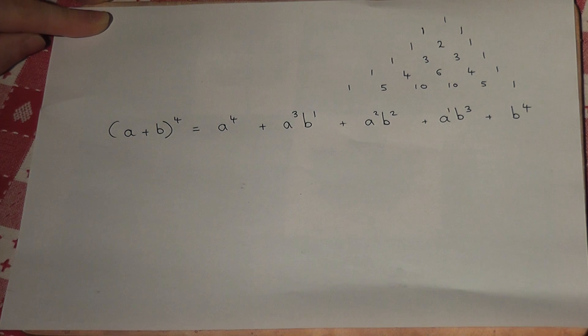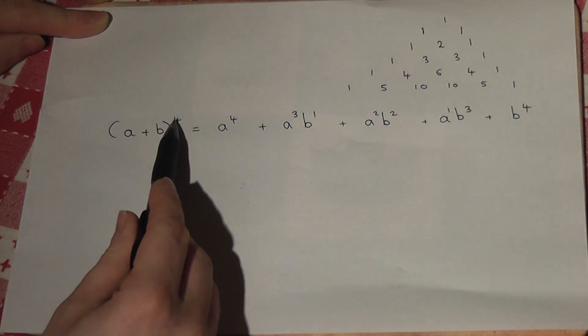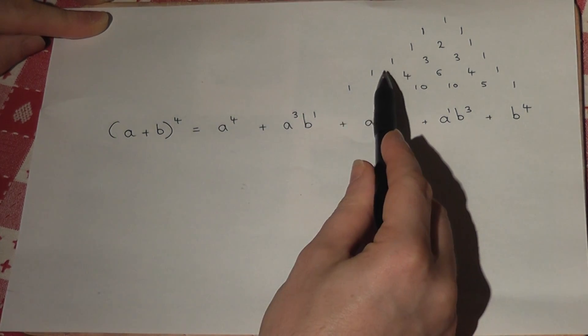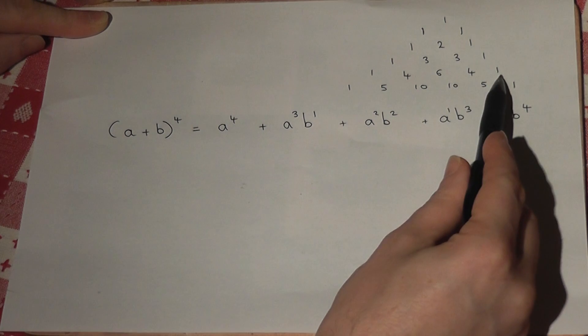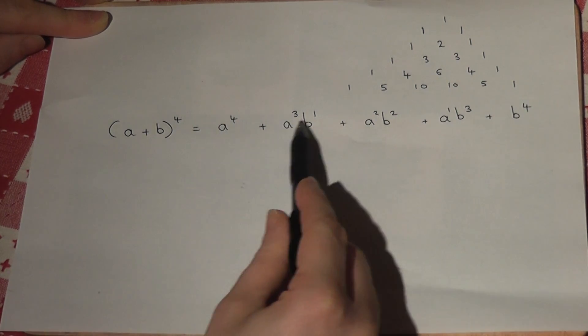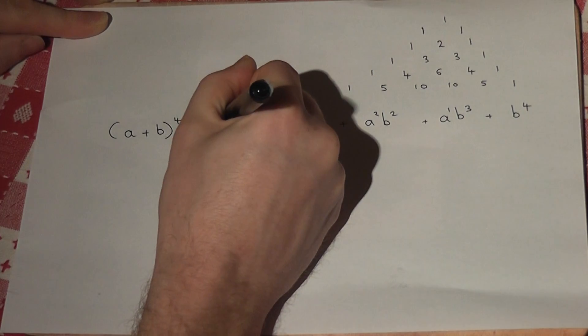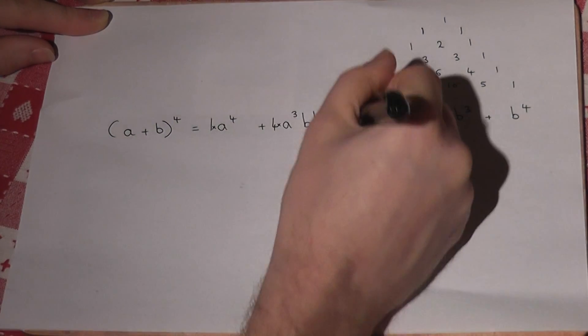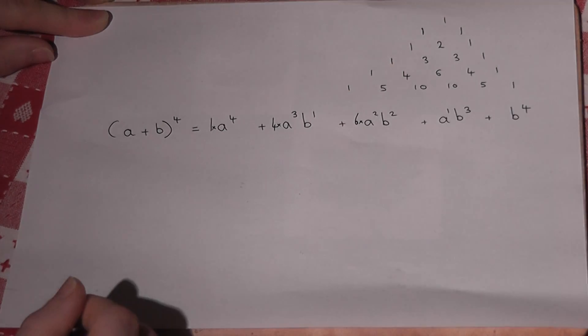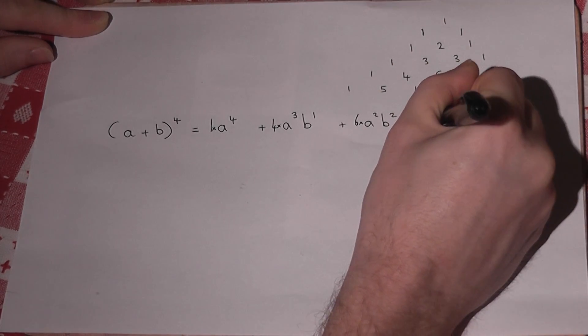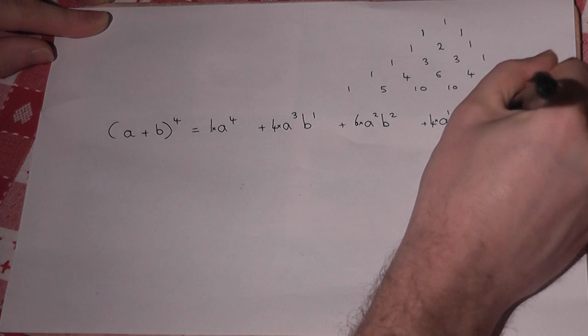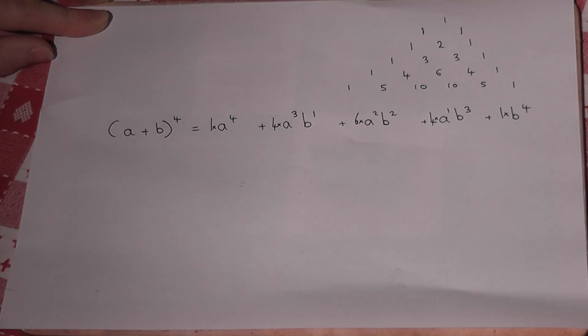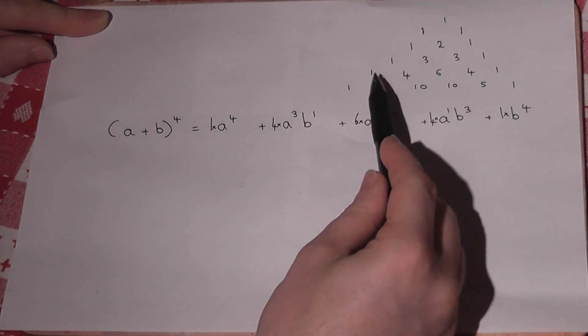We then add on some coefficients. We look for the row in Pascal's triangle which has a 4 after the 1, and the 1, 4, 6, 4, 1 provide the coefficients for each of those terms. Each of these terms are multiplied by the coefficient within Pascal's triangle.